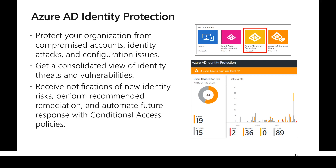Azure AD Identity Protection is a premium P2 feature in Azure AD licensing. It is a feature which helps in protecting and securing the identities of a user. It helps with notification of compromised accounts, alerts for identity attacks or misconfigurations, and provides a dashboard showing risky events happening in real time.